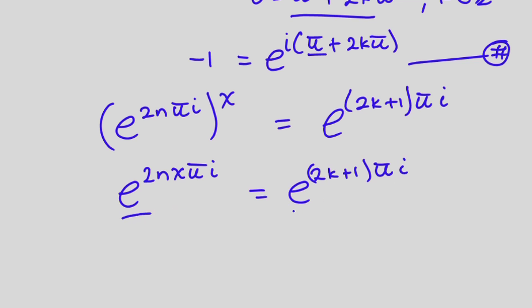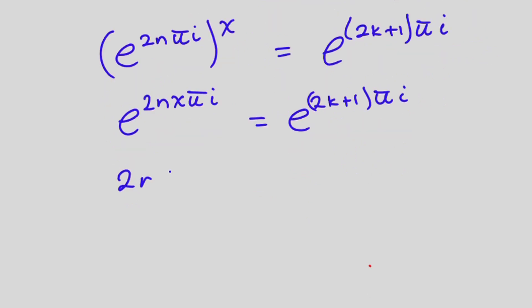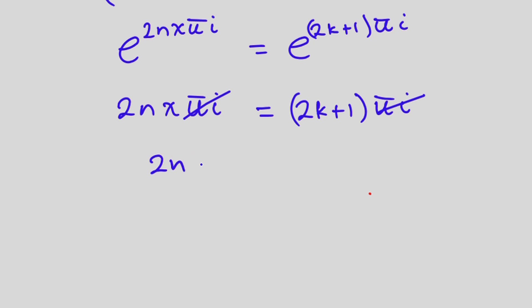We see that the bases are the same so straight away we can equate the powers. We're going to have 2nx pi i is equal to 2k plus 1 times pi i. Straight away we can divide through by pi i and we are left with 2nx is equal to 2k plus 1.